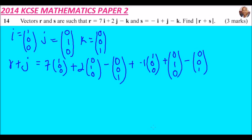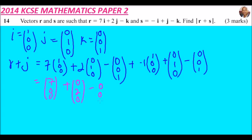At that point, what you need to do is open the brackets. When you open the brackets for r, multiplying the constants through, this gives you (7, 0, 0), plus (0, 2, 0), then minus (0, 0, 1).